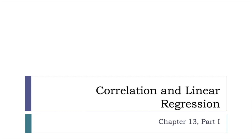This is the first part of a two-part lecture from chapter 13 on correlations and linear regression. In previous chapters, we've been making estimations of our population based on samples, and we were either looking at one interval-level variable or one ratio-level variable. The biggest difference in this chapter is that now we're going to be studying the relationships between two variables — either two interval-level or two ratio-level variables.